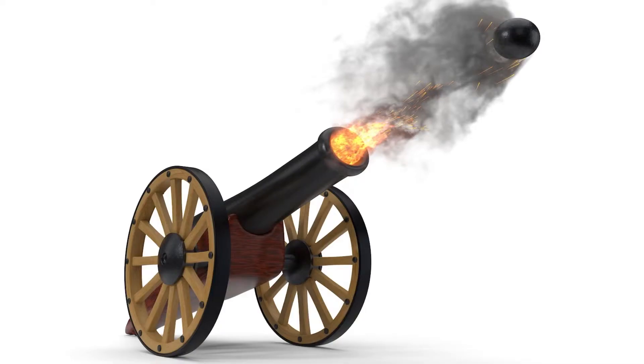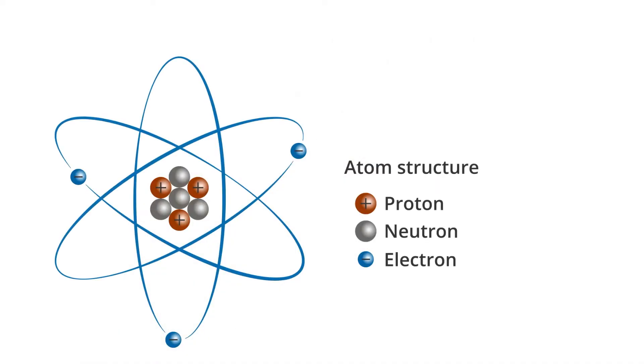Physics studies things that happen on the everyday scale, like the firing of a cannonball and its path through the air. And physics studies things on the really small scale, like the atom, which is made up of protons, neutrons, and electrons. We can understand that with physics.